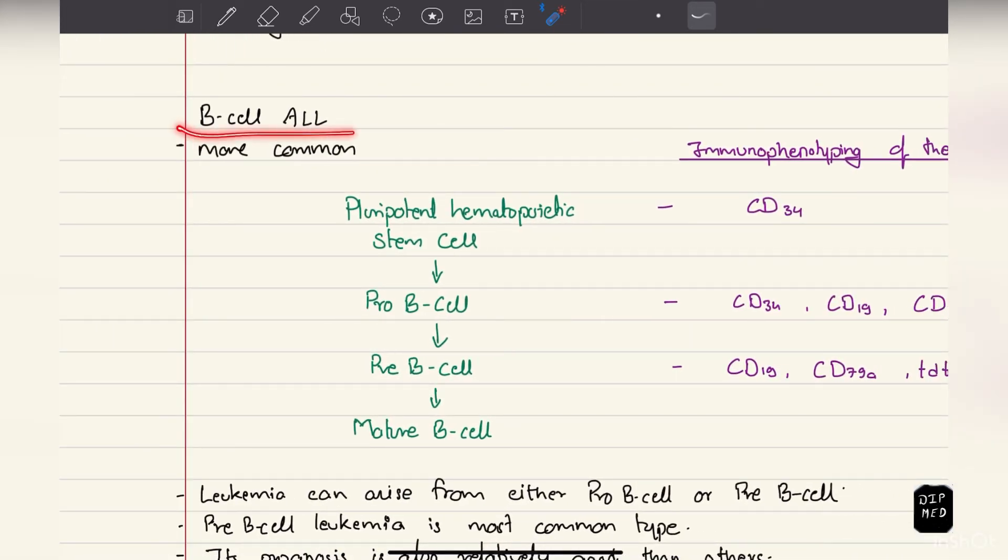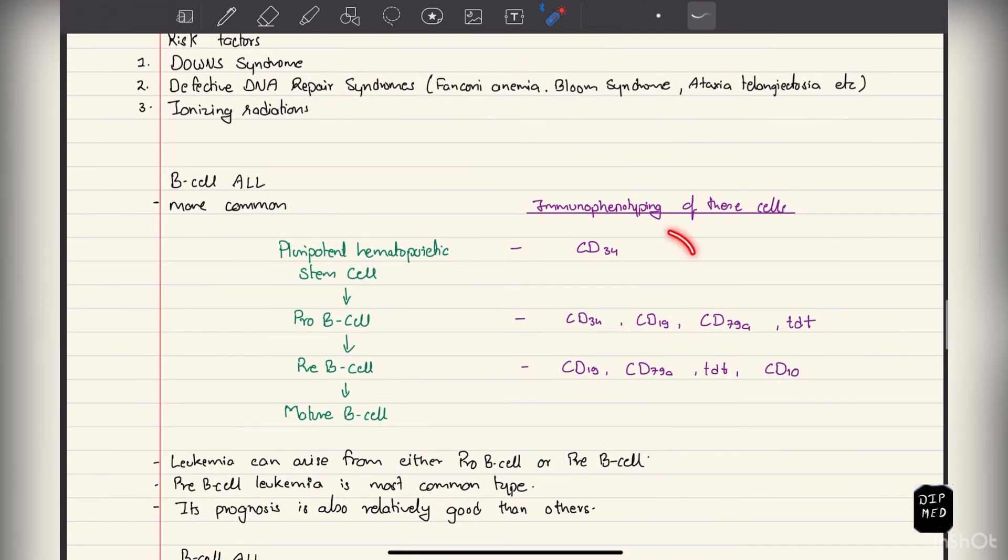B-cell ALL are more common than T-cell ALL. In the bone marrow, pluripotent hematopoietic stem cells first differentiate to pro-B cell, which differentiates into pre-B cell and then mature B cells. These are the immature B cells from which leukemia can occur. Out of these two, pre-B cell is the more common one, and here I've also included the immunophenotyping of these cells.